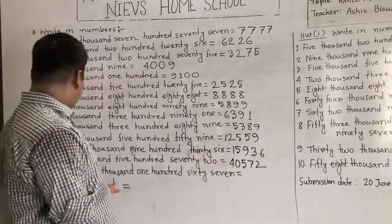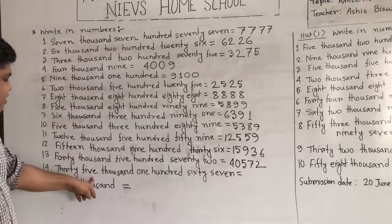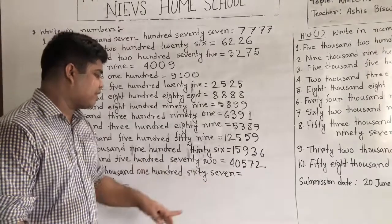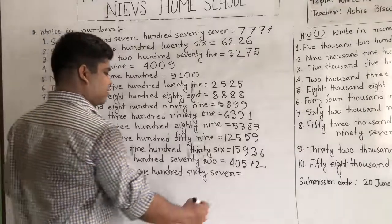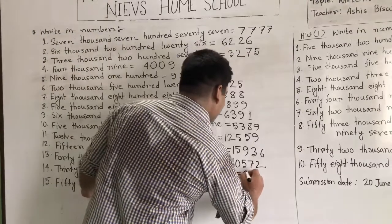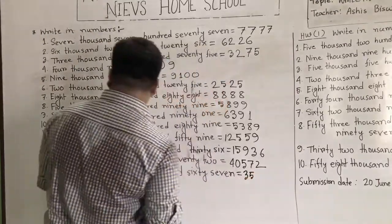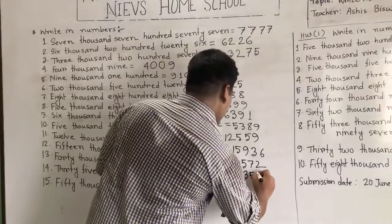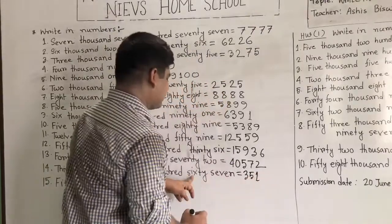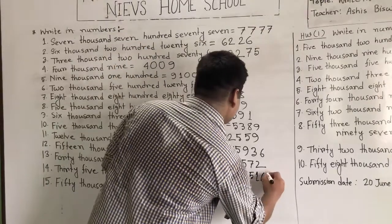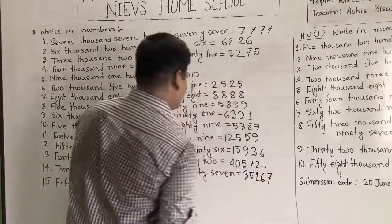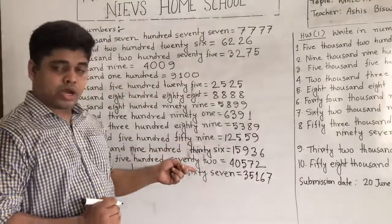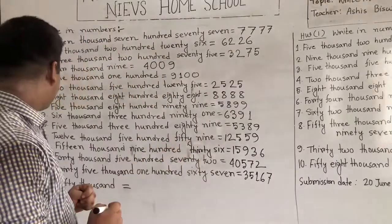Our next number is 35,167. 35,000 — so write 35 first, then 167. It is read as 35,167.